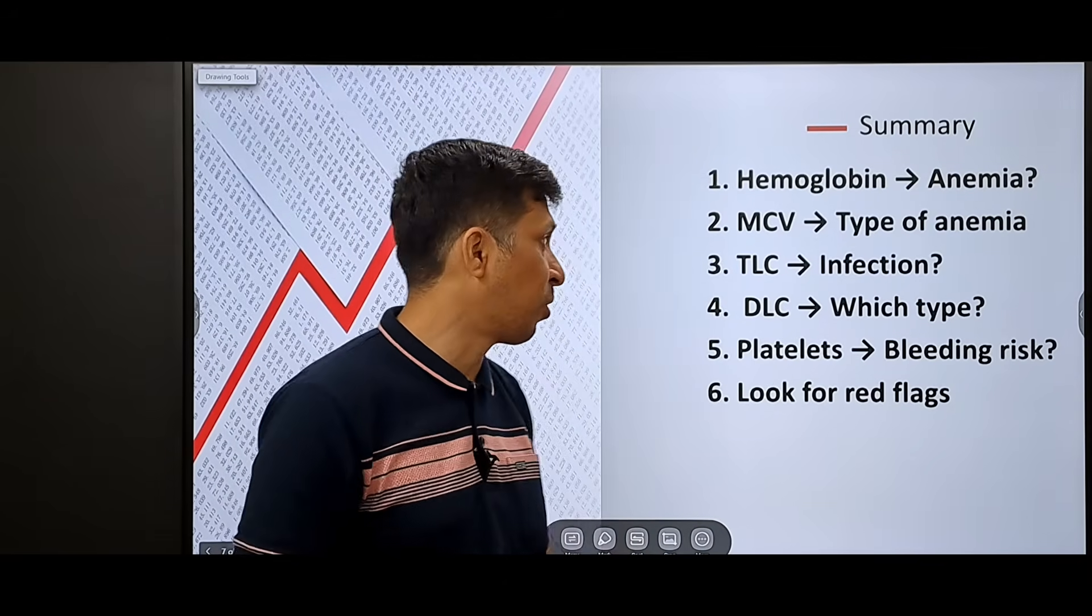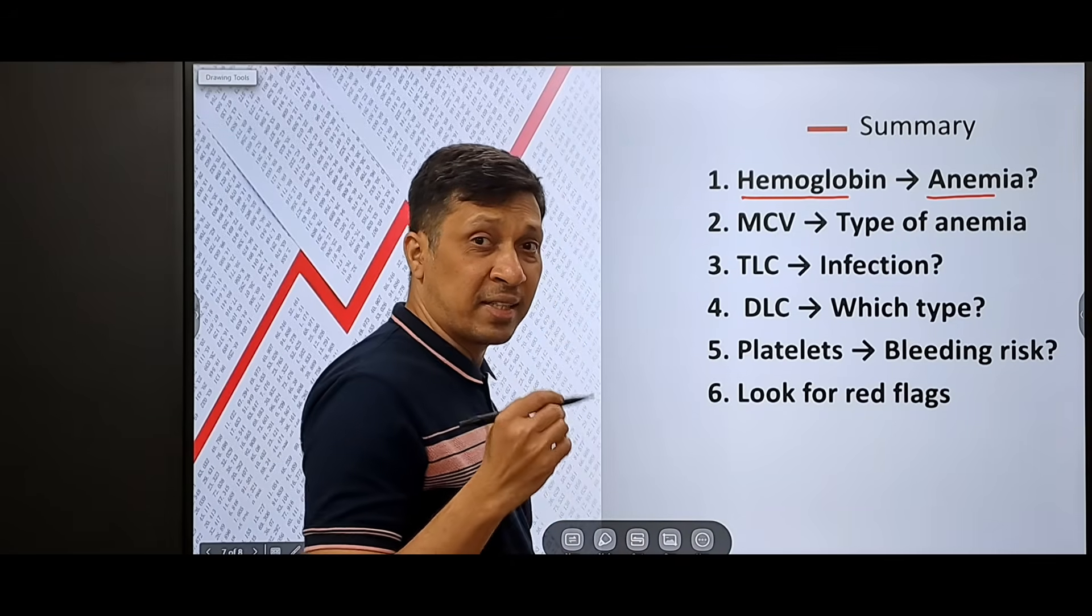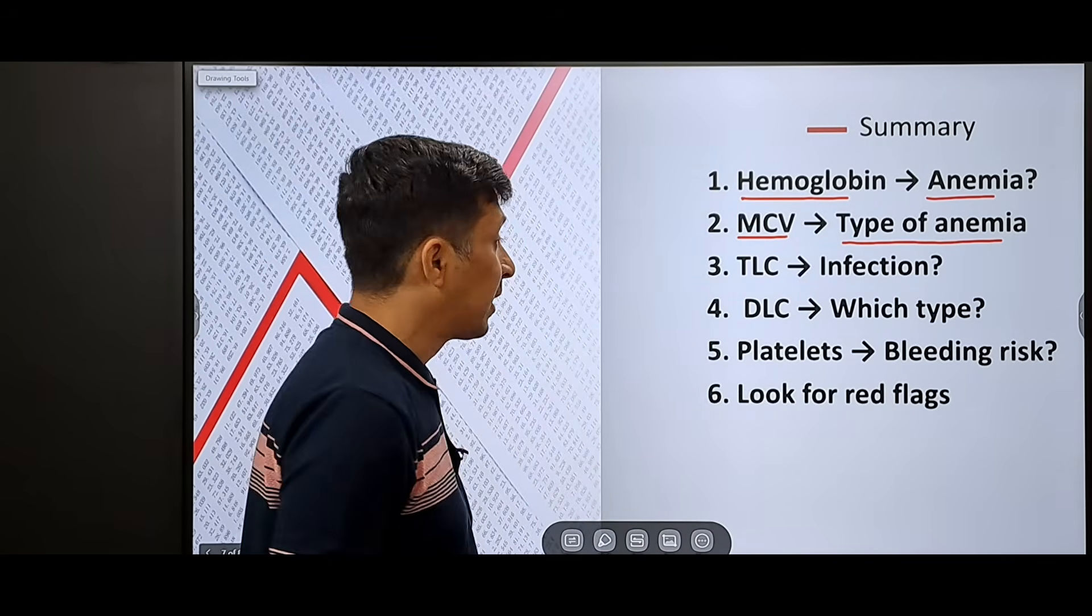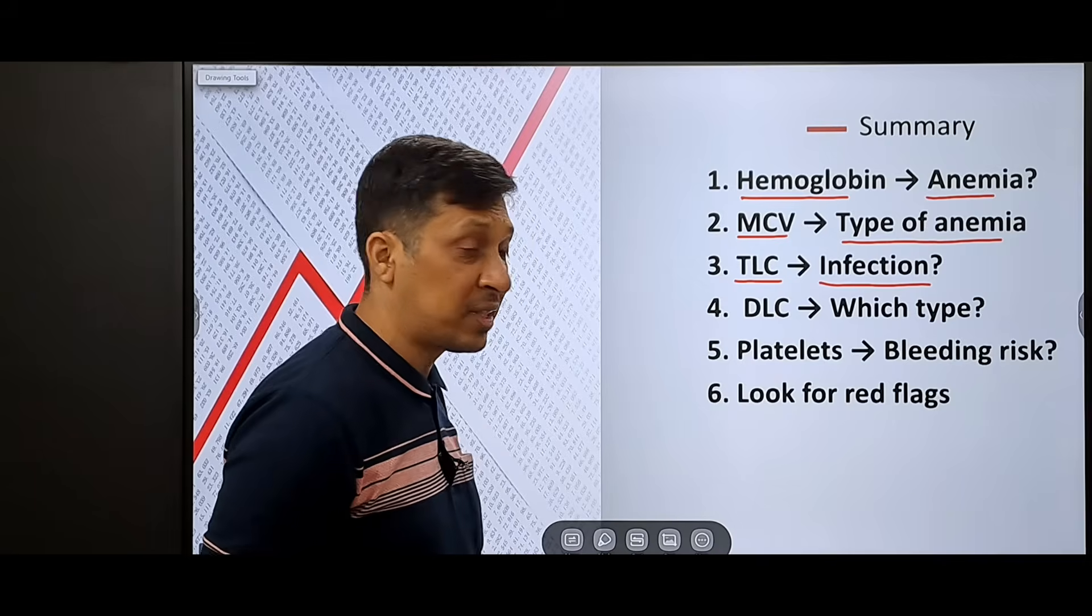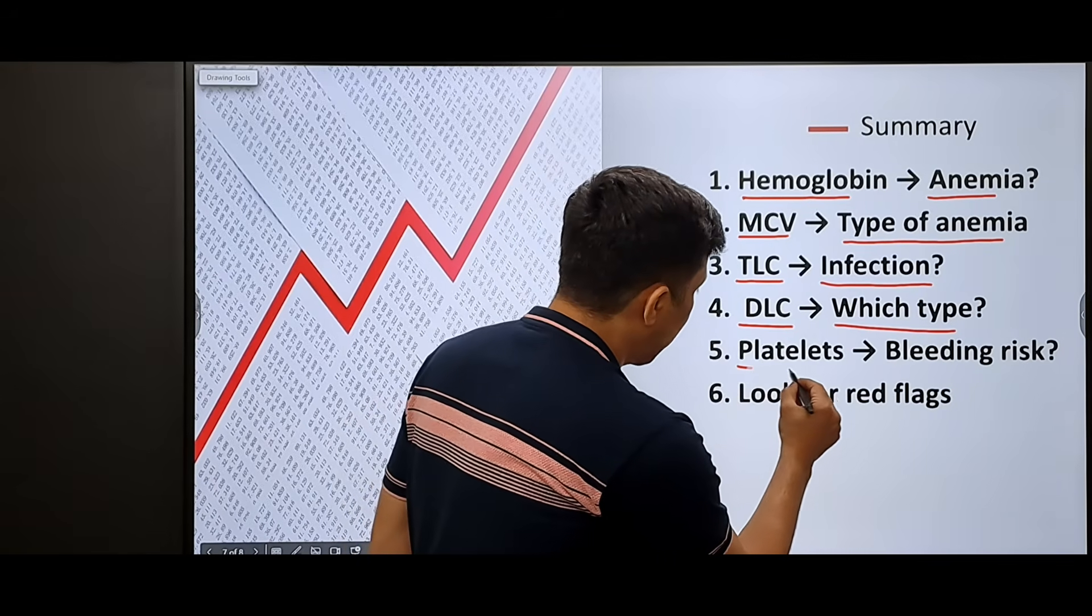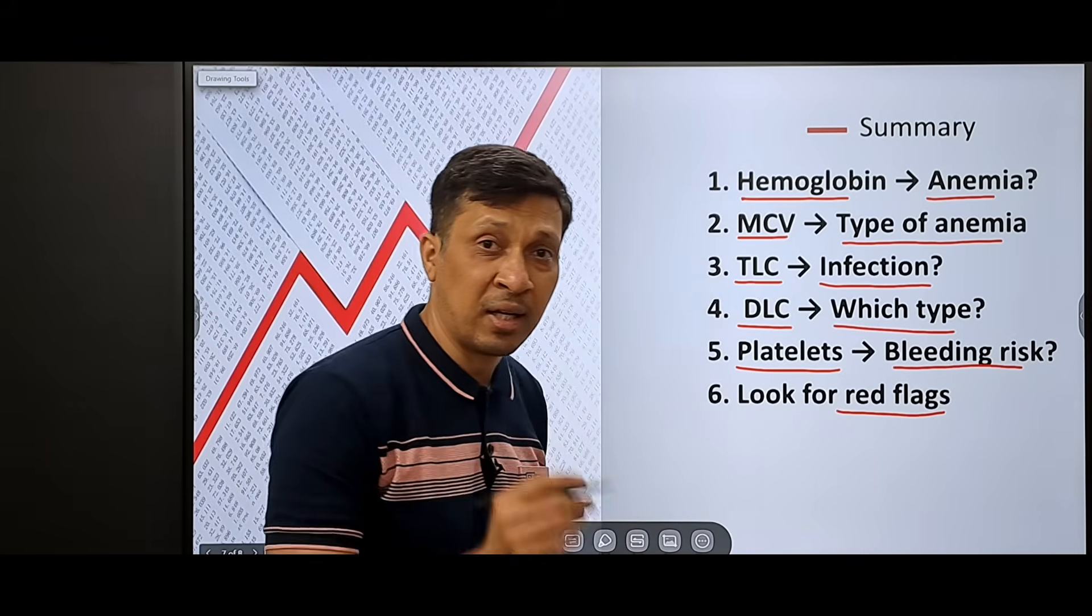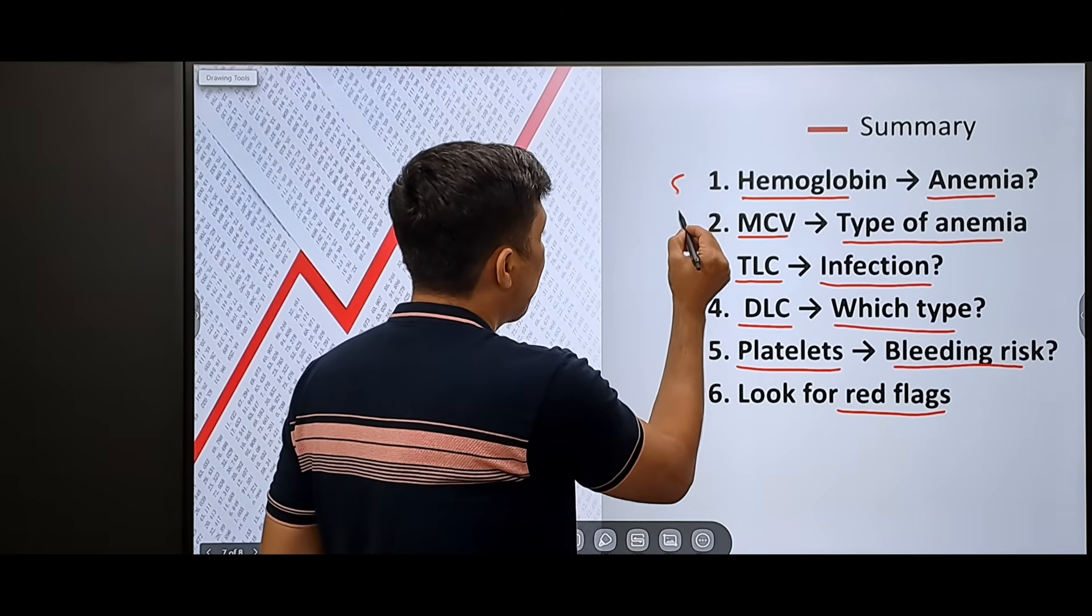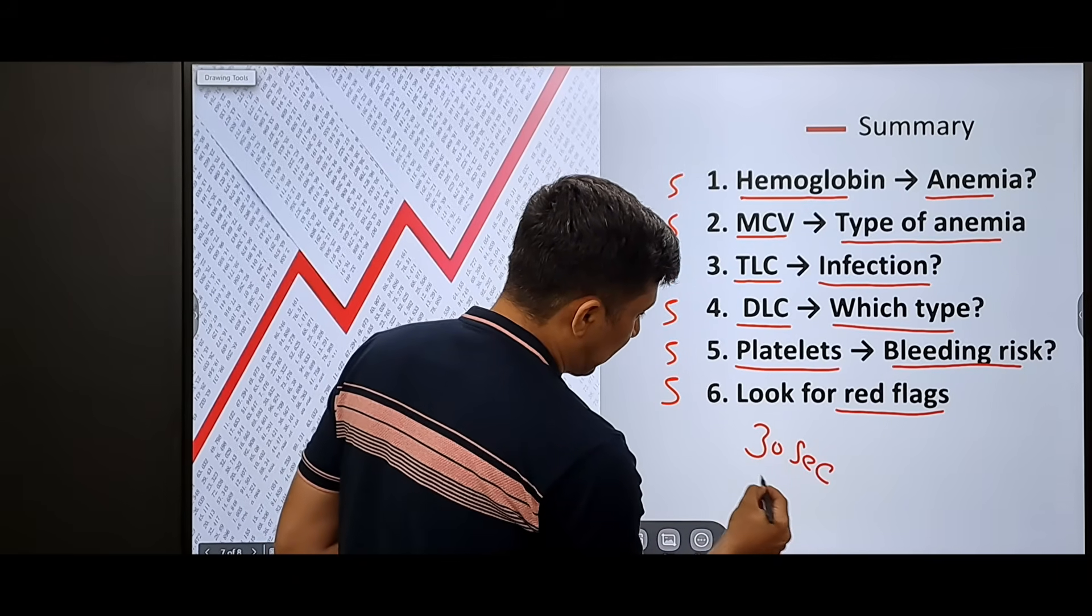The summary of six steps is as follows. In the first step, we see the hemoglobin that gives us idea if there is anemia or not. If there is anemia, we see the MCV, which gives us idea about the type of anemia. Then we look at the total leukocyte count that gives us idea of infection. Then we see the differential leukocyte count that tells us which type of infection is there. Then we see the platelets that gives us idea if there is a bleeding risk or not. And lastly, we see for the red flag signs, the four important parameters which need urgent action. These six steps, each will require five seconds to assess. And in this way, five into six, in 30 seconds you can assess a CBC report.